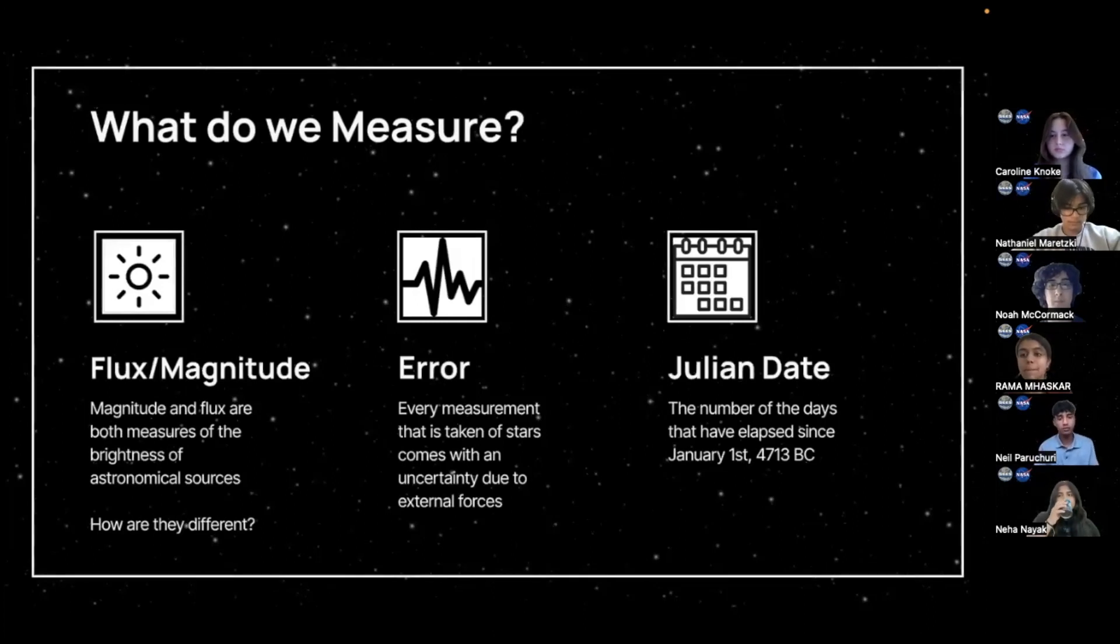And our two main goals from this project were to detect exoplanets using the transit method and to determine the exoplanets mid-transit times. Now, as we calculated most of these properties, there were a few main things that we were measuring. Firstly, there was flux and magnitude. Both flux and magnitude measure the brightness of astronomical sources, but they are a bit different. Flux measures the brightness in watts per meter, while a magnitude uses six magnitudes with the brightest at one and the faintest at six. A star at magnitude one is 100 times brighter than a star at magnitude six. Along with these measurements comes uncertainty. The software that we use calculates this uncertainty from external forces and creates a margin of error.